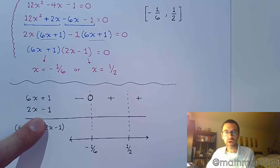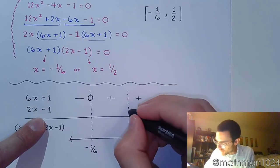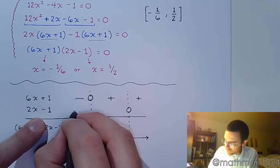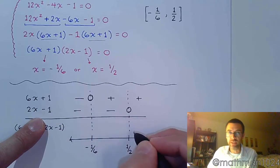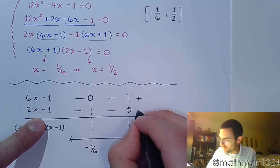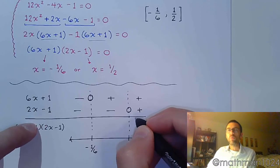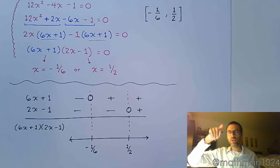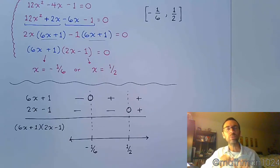For 2x - 1, his critical value is here at positive 1 half. So before he gets to 1 half, he's underneath the x-axis and he's going to be negative. And then that factor becomes positive once you get beyond 1 half. Now I don't want you to say, but I thought the parabola does this. The parabola does. But I'm looking at it in terms of its two linear factors. And those linear factors are lines whenever you graph them.